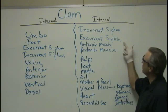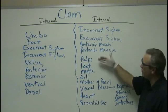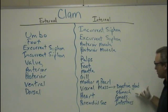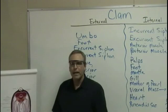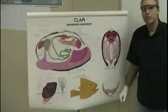Internally, we're going to look at the incurrent and excurrent siphons — these are kind of hard to see from the interior portion — the anterior and posterior muscles, palps, foot, mantle, gill, mother of pearl, visceral mass, which will have the digestive gland, stomach, gonads, intestines, and the heart and the pericardial sac. We do have another resource for you here. You can take a look at the posters and use them to help you when you're dissecting. I'll have that out in the front of the class — that could be a valuable resource if needed.